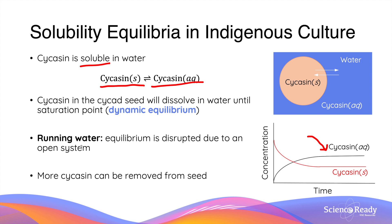This is why indigenous people use running water during leaching. Using running water prevents the reaction from reaching a dynamic equilibrium, as any dissolved toxin is quickly removed from the system. In other words, the equilibrium is constantly disrupted due to an open system.